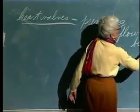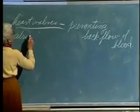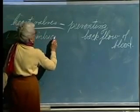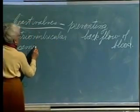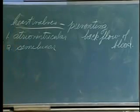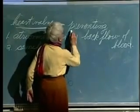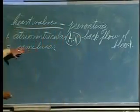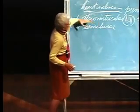Now we have one other item regarding the wall — the terminology: the interventricular septum. If you've got your heart with the four chambers — right atrium, left atrium, right ventricle, left ventricle — this will be your interventricular septum.